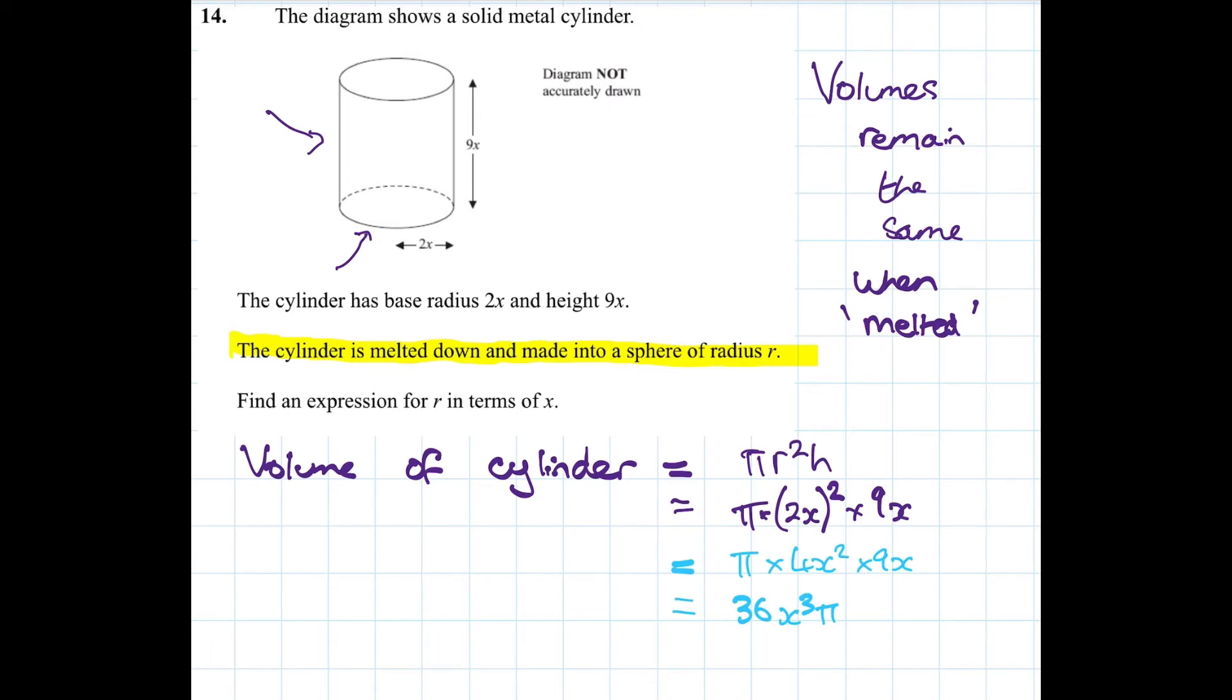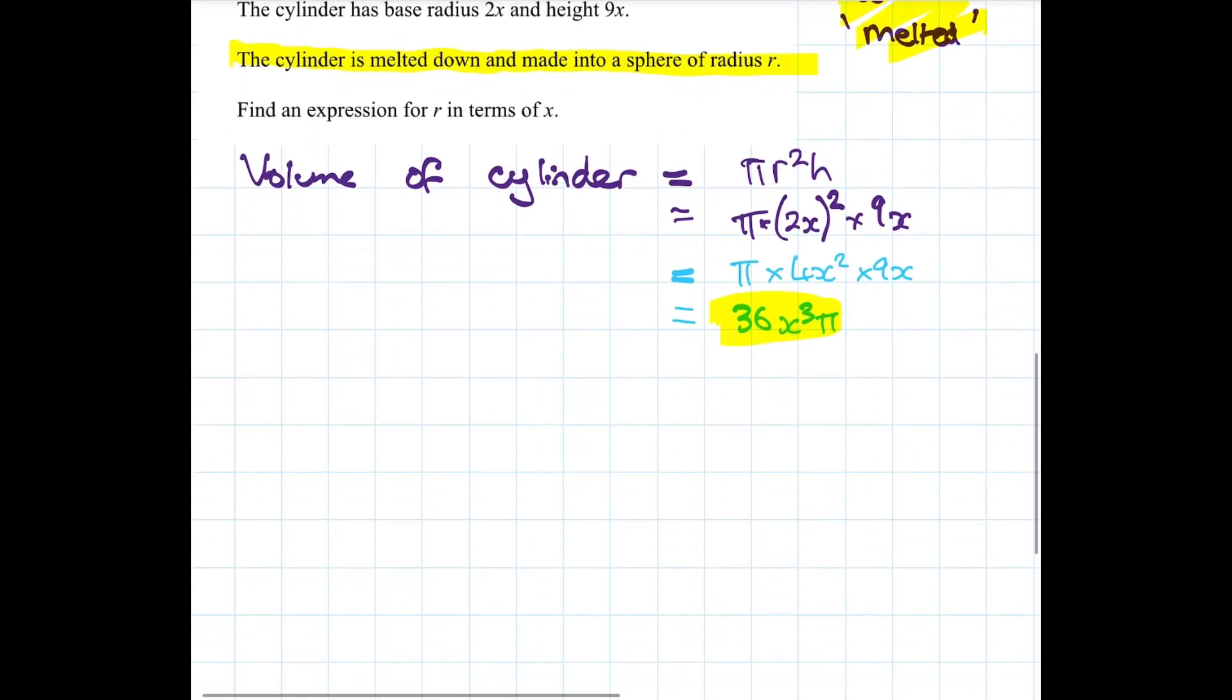Now remember what we said up here, the volumes remain the same when it's melted down. So in other words whatever we find to be the volume of the sphere it's going to be the same thing as this.